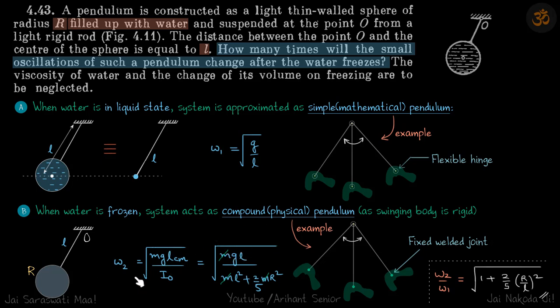That is pretty straightforward. We know omega of a compound pendulum is root(mg·Lcm/I_O). So I_O is I_cm + mL², which is 2/5·mR² + mL².